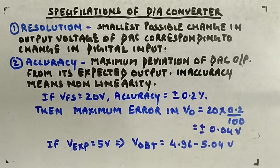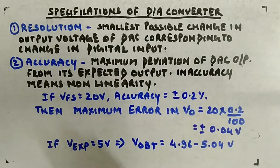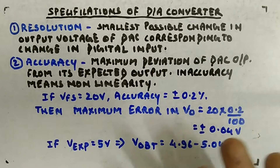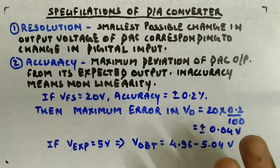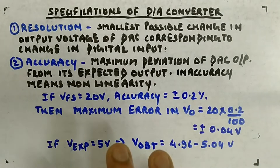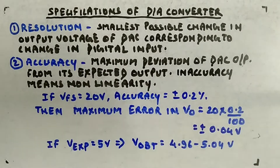Now let's look at the specifications of a digital-to-analog converter, or the characteristics of a DAC given by the manufacturer. Some manufacturer will make digital-to-analog converters, and when you purchase from them they will provide a datasheet where all the specifications of that DAC will be listed. I am going to list down all the parameters or characteristics that will be given for a particular DAC.